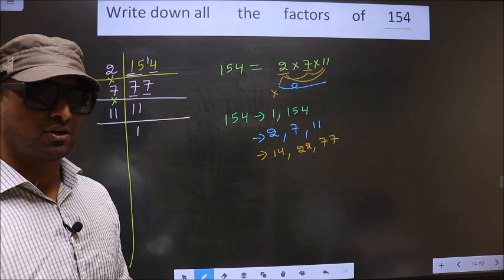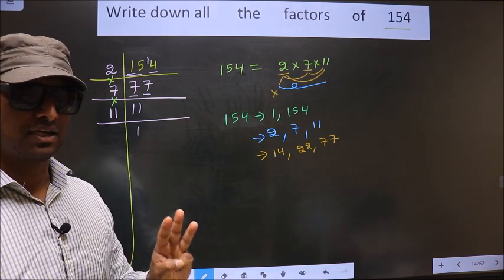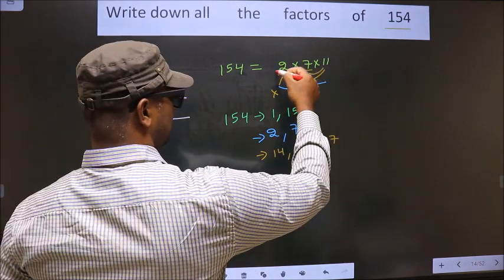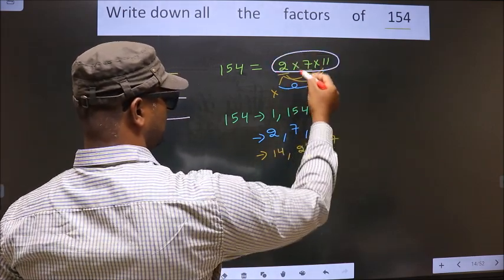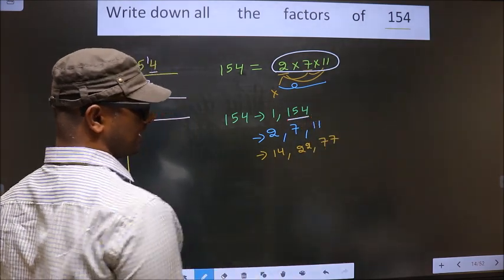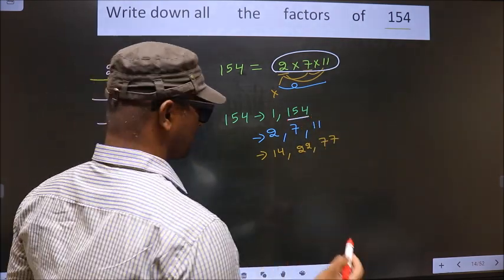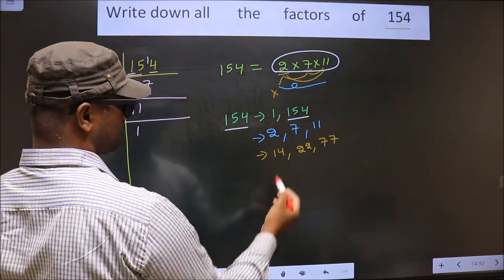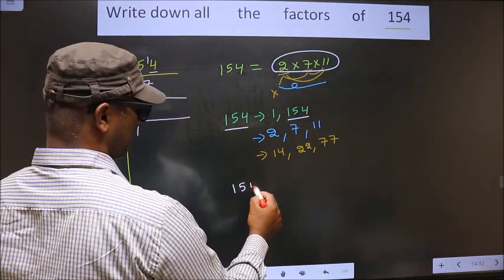Next. Now, you take a combination of 3 numbers. How do we take? Here, we have only 3 numbers. If we take all the 3 numbers, we get 154 itself. So, thus, these are all the factors of 154.